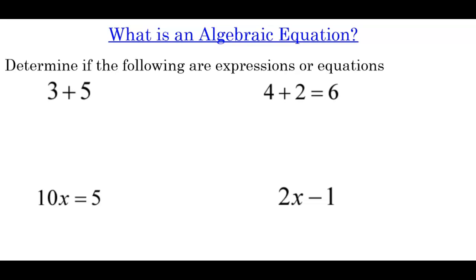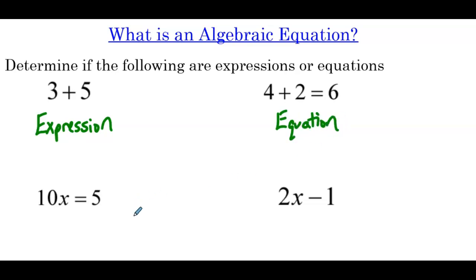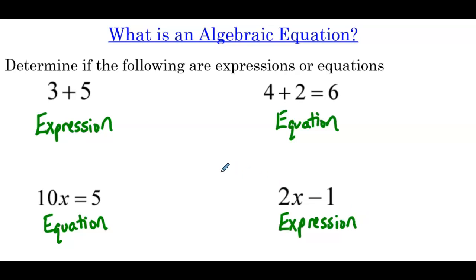Determine if the following are expressions or equations. So 3 plus 5 is an expression, 4 plus 2 equals 6 is an equation, 10x equals 5 is also an equation, and 2x minus 1 is an expression. What differentiates an expression from an equation is the equal sign. If you look at the two equations, we have equality, whereas the two expressions do not.